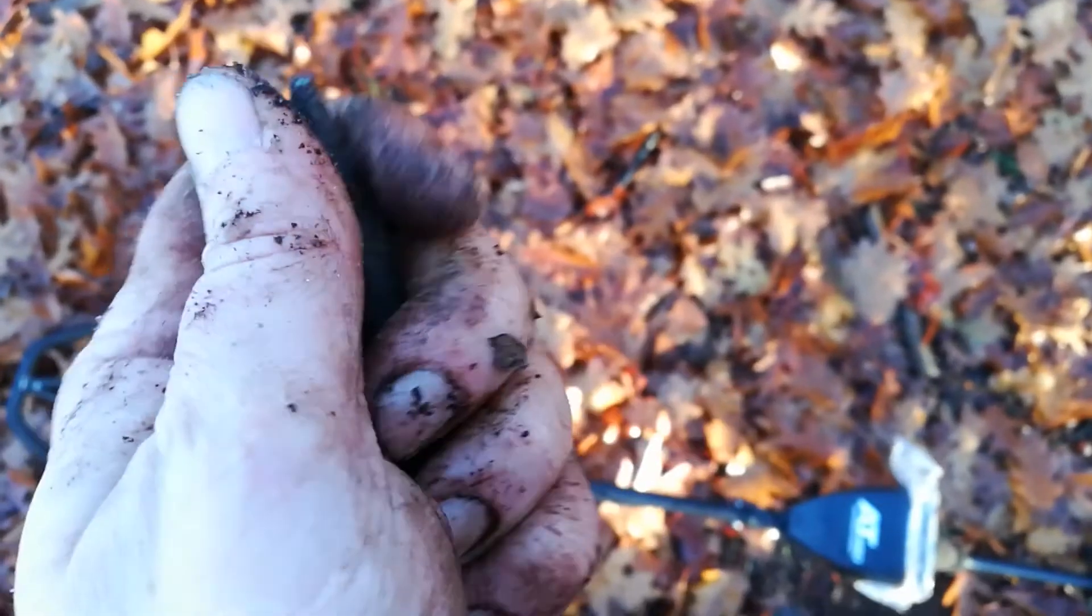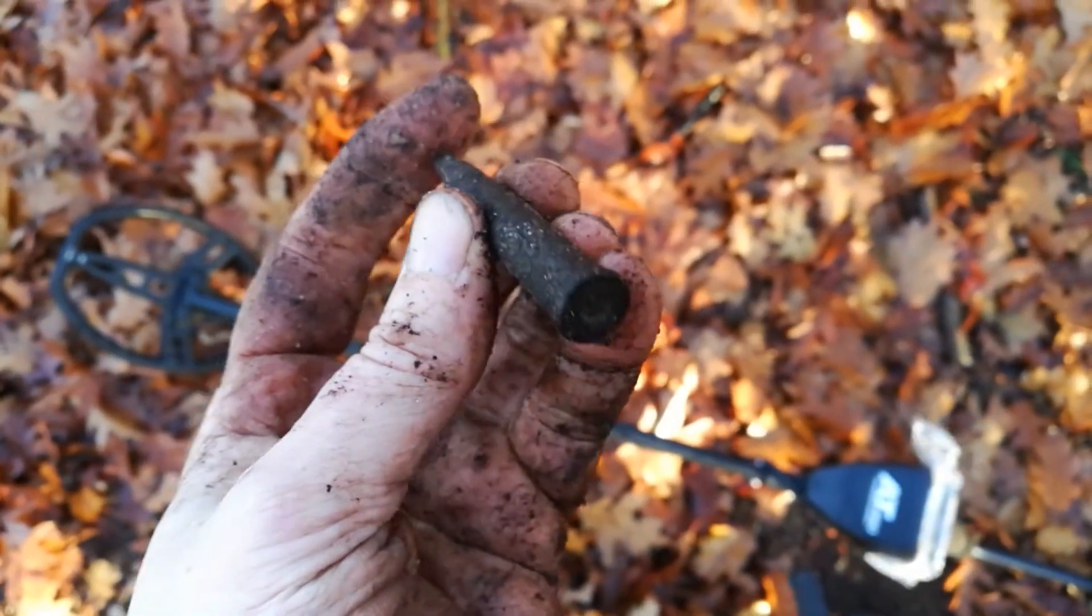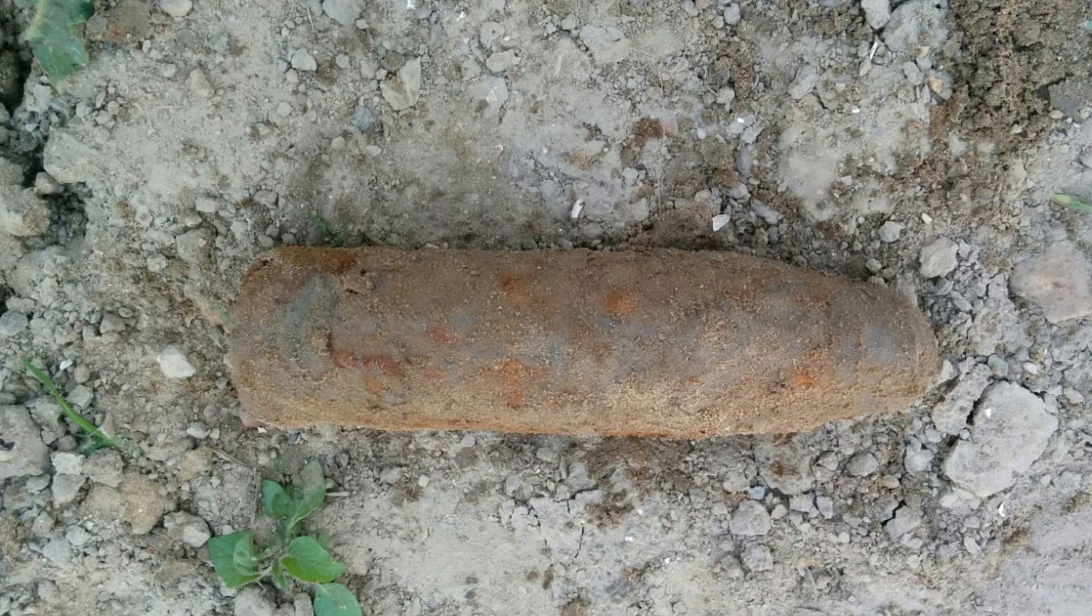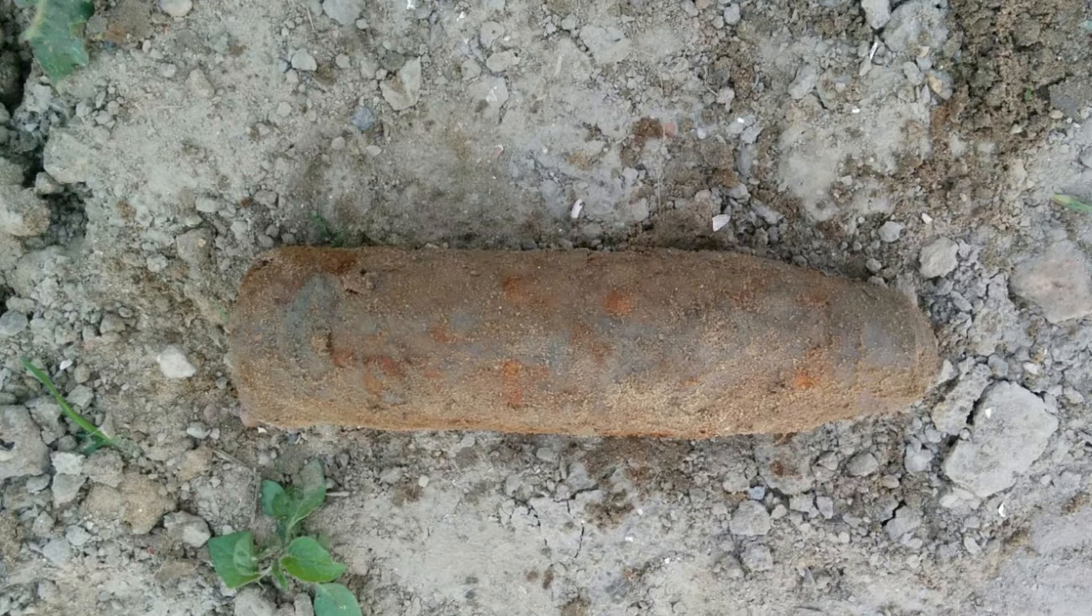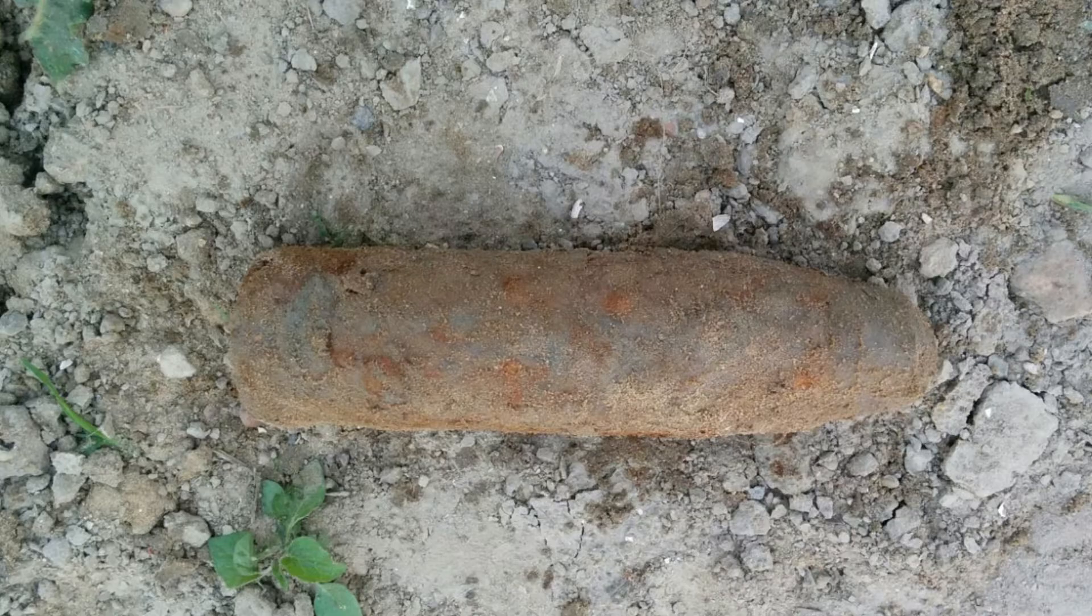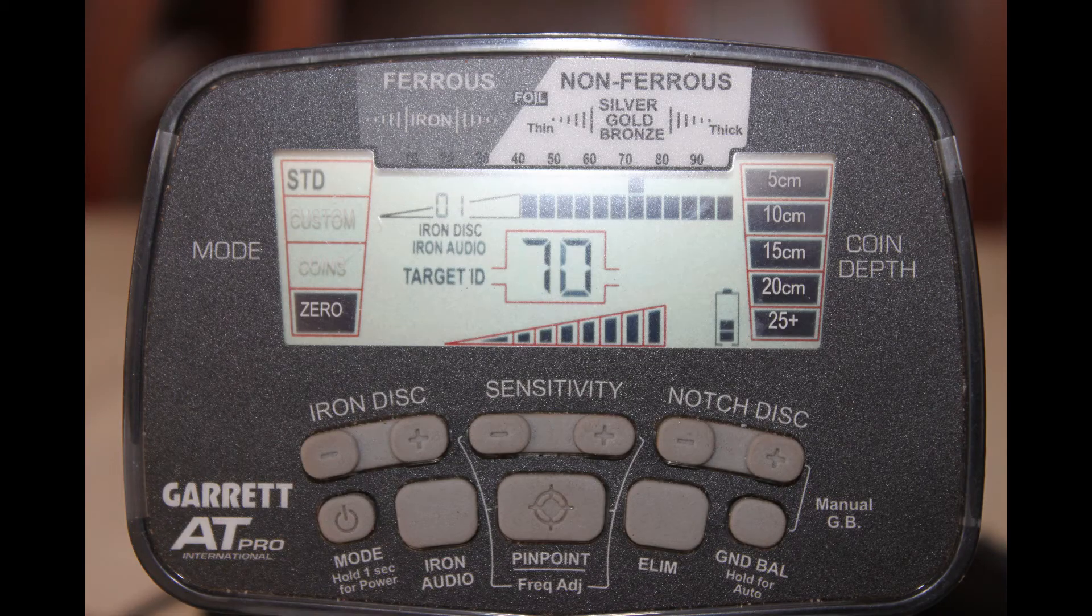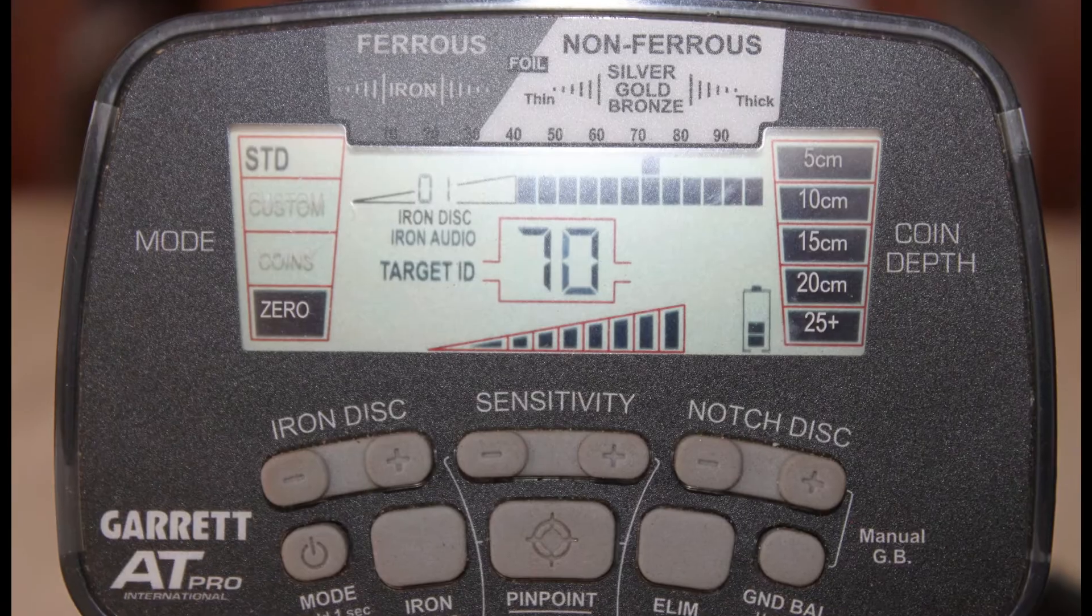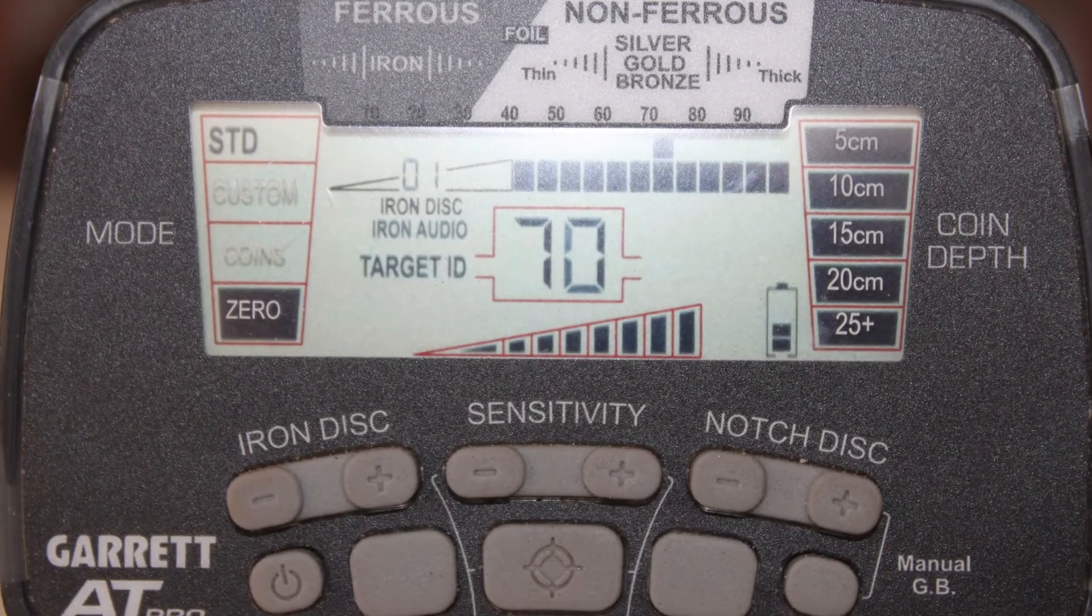And in some areas there is a lot of military stuff in the ground, so discrimination can be a lifesaver if you'd like to avoid a specific type of find, for example this grenade. Anyway, it got me wondering how the discrimination between the different metals works. I mean technically.